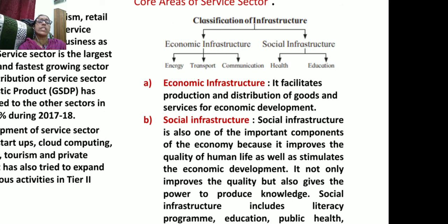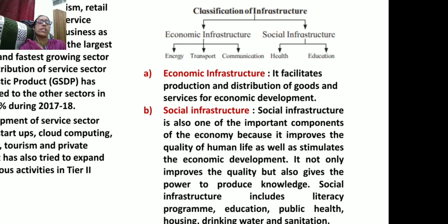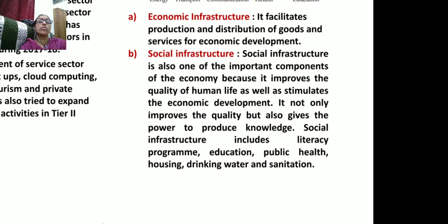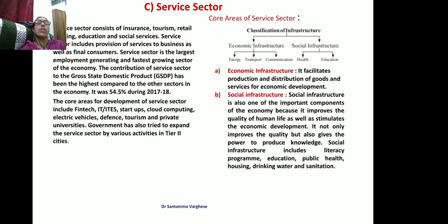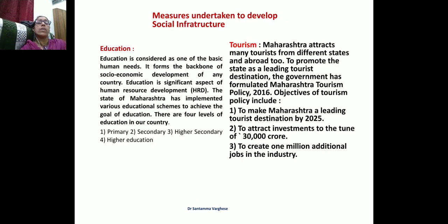Economic infrastructure facilitates the production and distribution of goods and services for economic development. Social infrastructure promotes the social well-being of human life. Social infrastructure includes literacy programs, educational facilities, public health, housing, drinking water, and sanitation.